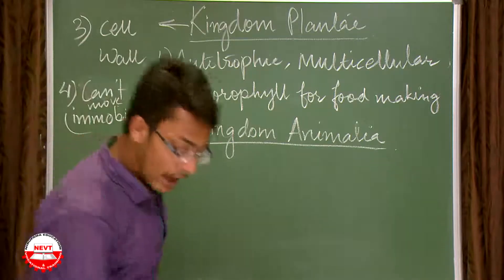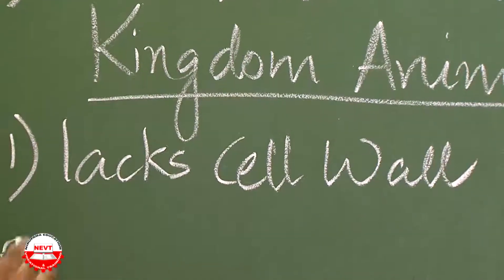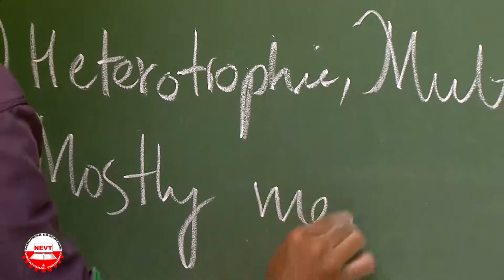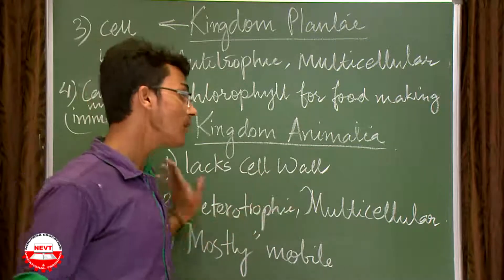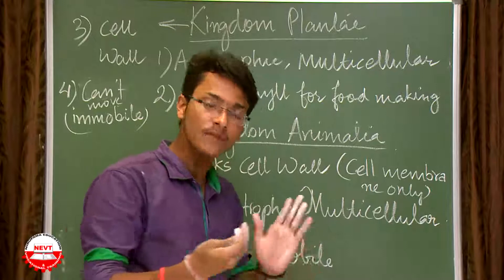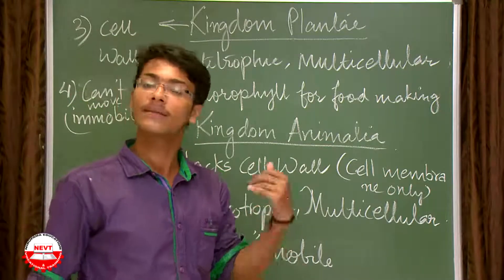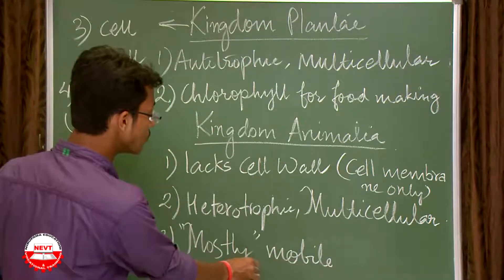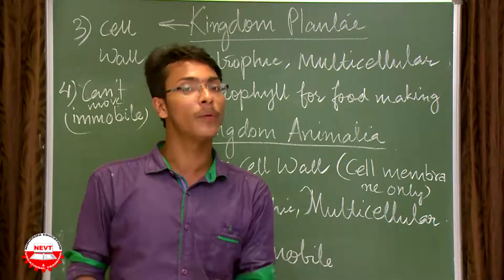As an introduction to Kingdom Animalia: they lack cell wall, they are heterotrophic, and they are multicellular. They lack cell wall — they have only a cell membrane, which we already learned in Chapter 5. They are heterotrophic, meaning no animal can make its own food; they are dependent upon plants. They are multicellular, with many cells doing different works. They are mostly mobile — 'mostly' because some animals are sedentary, meaning they are static in their position.